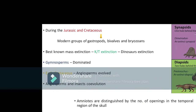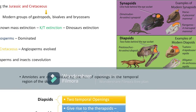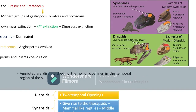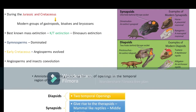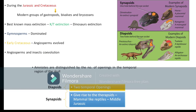Looking at the diagram, synapsids have one hole present behind the eye socket, while diapsids have two holes behind the eye socket. Diapsids have two temporal openings, and synapsids give rise to therapsids, which are the ancestors of mammals — mammal-like reptiles. These mammal-like reptile ancestors evolved in the middle Jurassic period of the Mesozoic era.